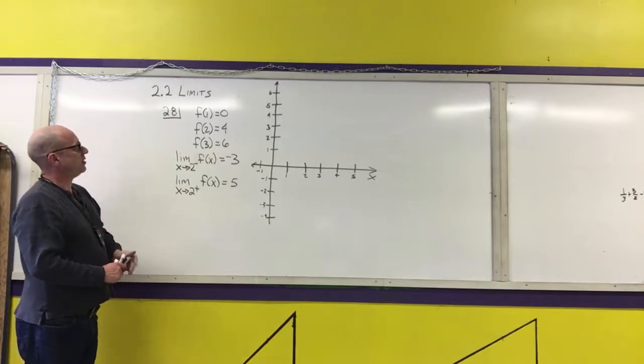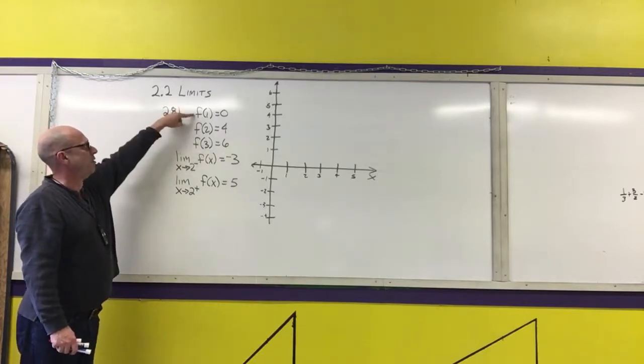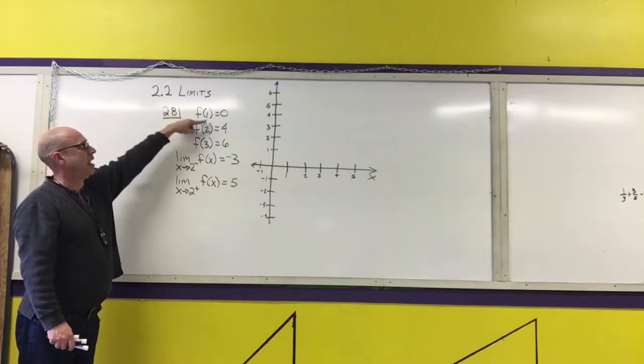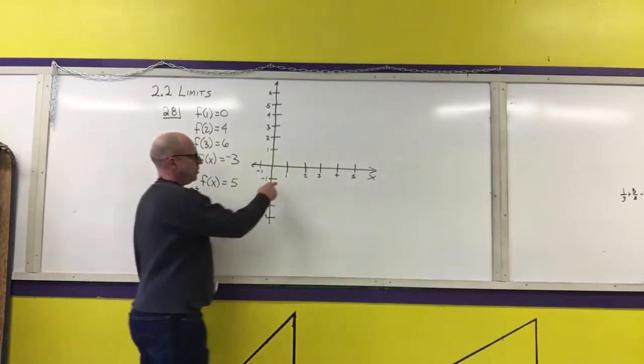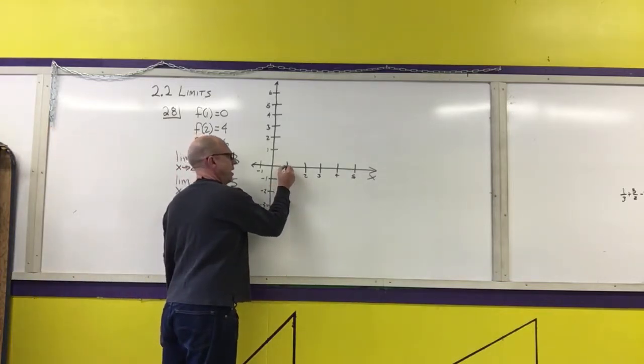For my reasoning process, where the values are exact, I'm going to put dots for those values on the graph. It says f of 1 is 0, so when x is 1, y is 0.